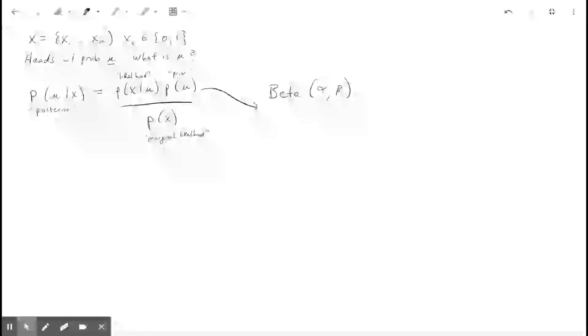And let's write out the PDF. So for the beta distribution, the PDF looks something like this. This is mu to the alpha minus 1 times 1 minus mu to the beta minus 1, all over what they call this beta function.